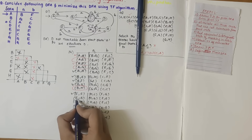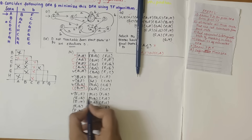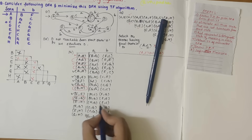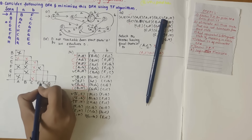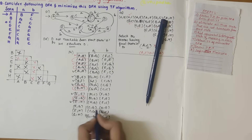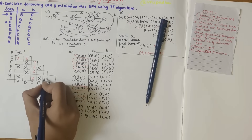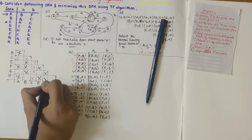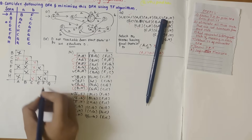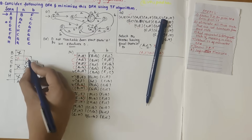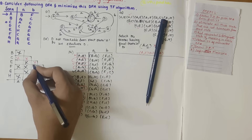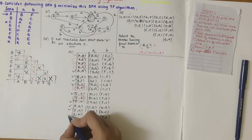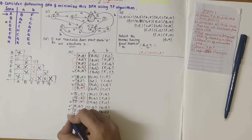For e-g: h-g and f-e — not previously marked, so circle it. For e-h: h-g and f-c — f-c is marked, so mark e-h. For f-g: c-g is marked, so mark f-g. For f-h: g-c is marked, so mark f-h. For g-h: c-e — c-e is marked, so mark g-h. Now let's collect all circled entries into a separate table.